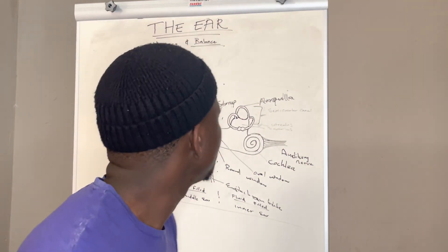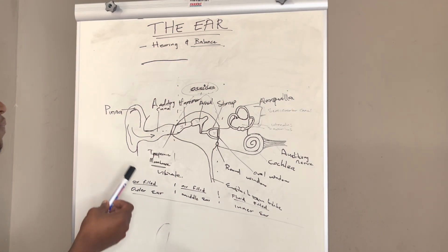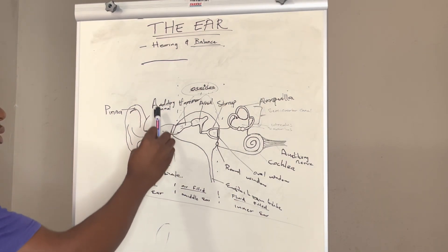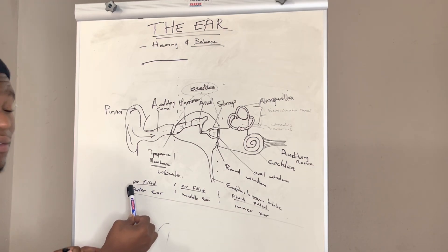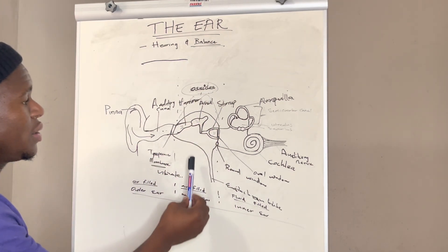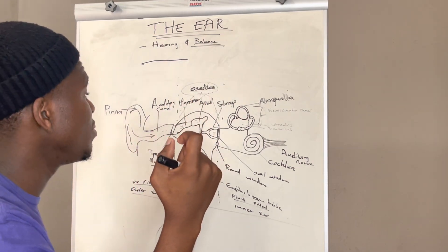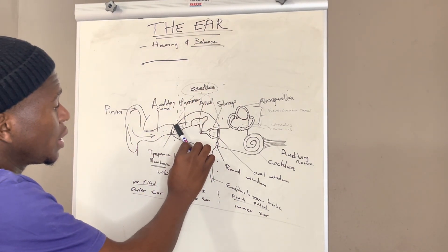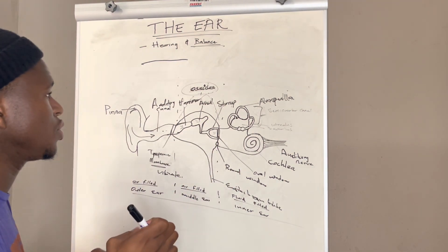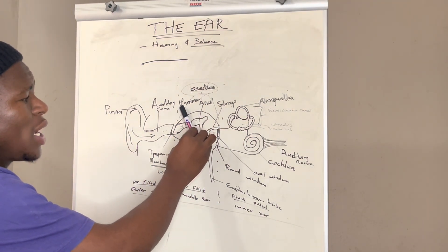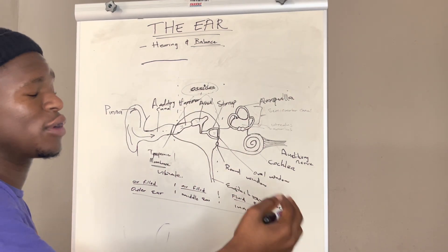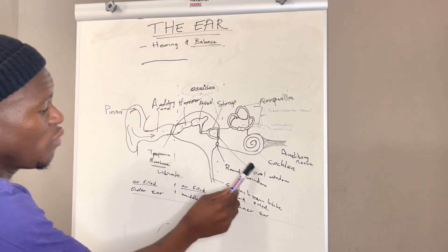Let's go through the structure of the ear together. From the outside we have the pinna, the auditory canal, and the tympanic membrane — these three make up the outer ear, which is air-filled. Moving to the middle ear, we have the ossicles, the three tiny bones arranged from largest to smallest, which are responsible for amplification of sound. These bones are known as the hammer, anvil, and stirrup respectively.